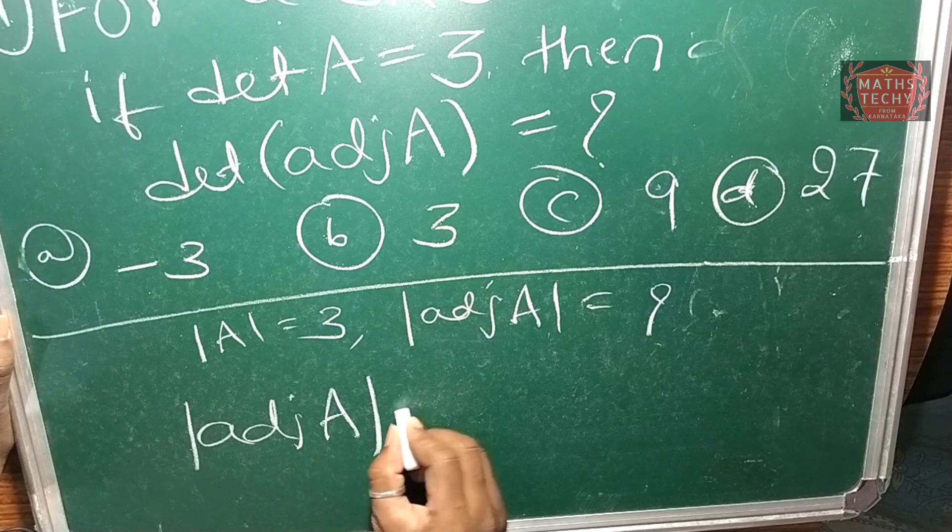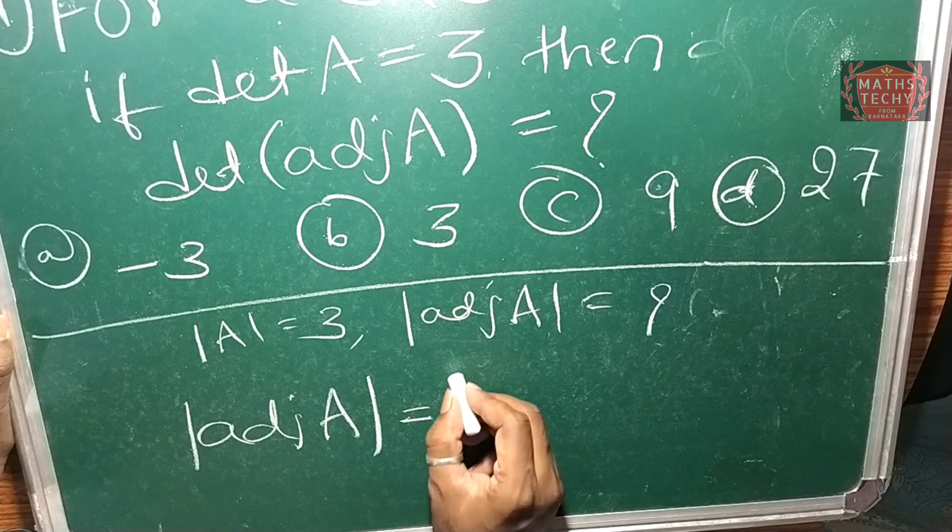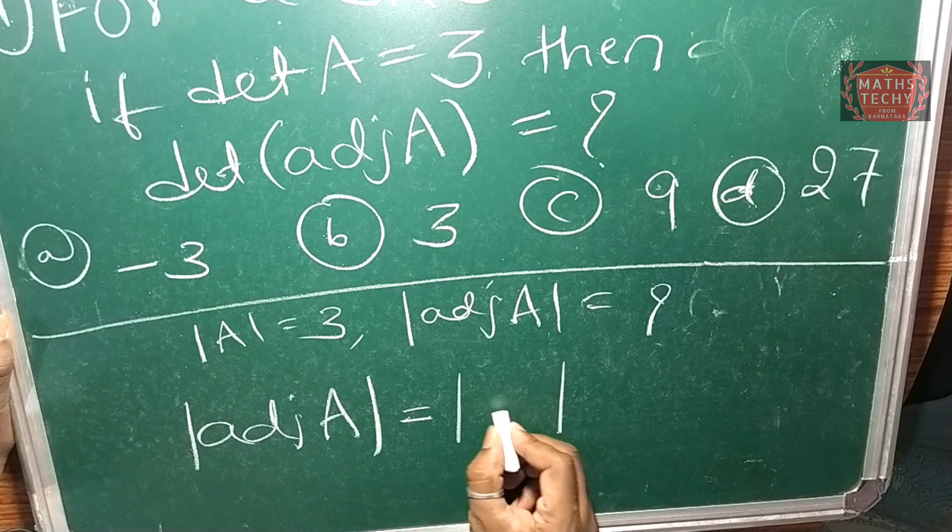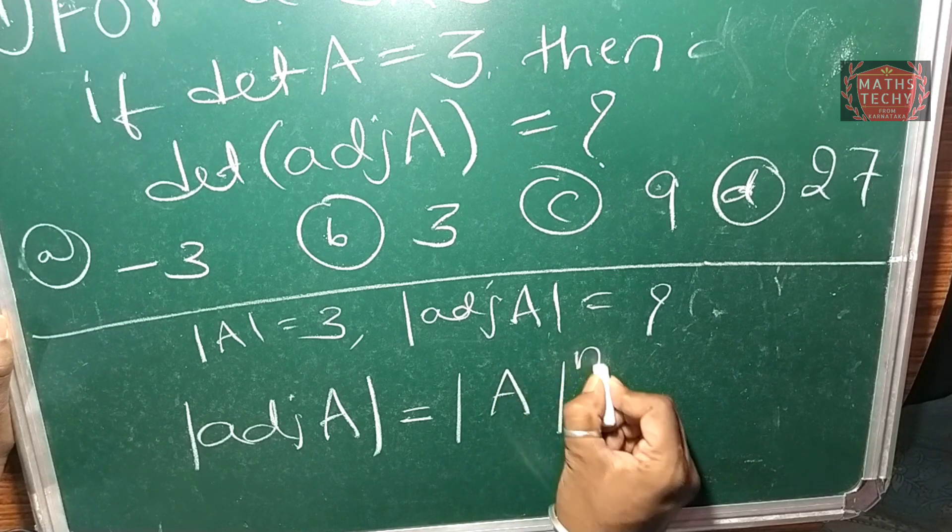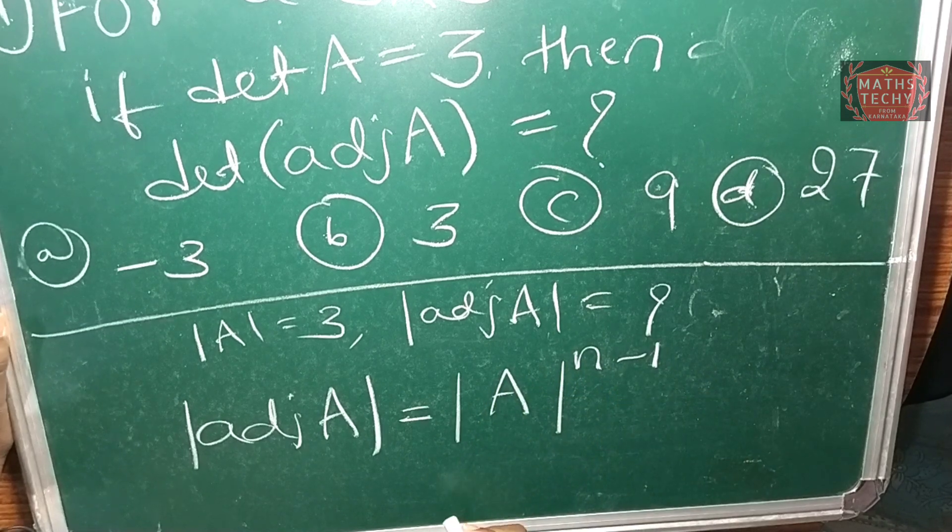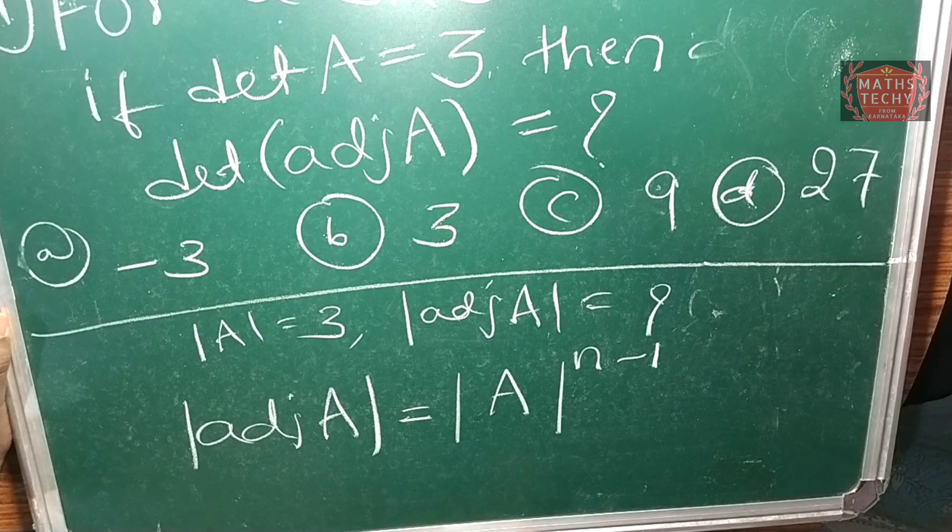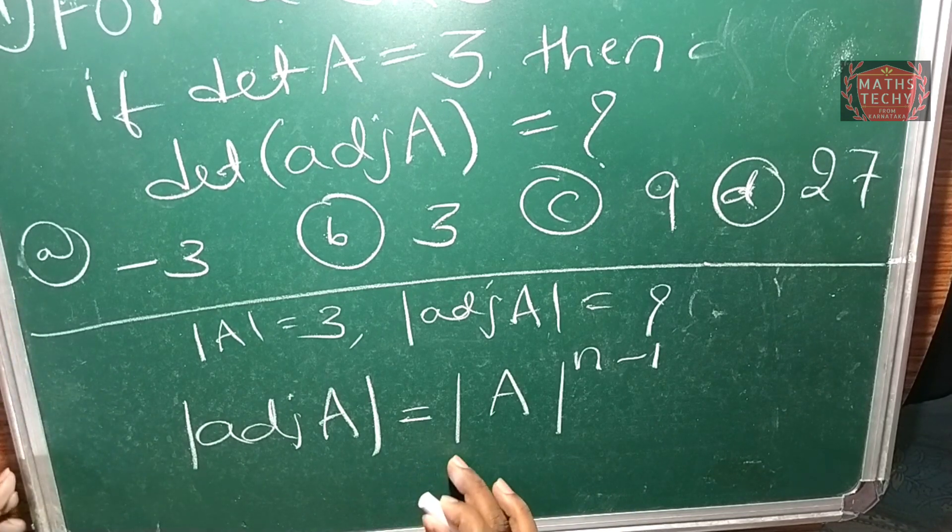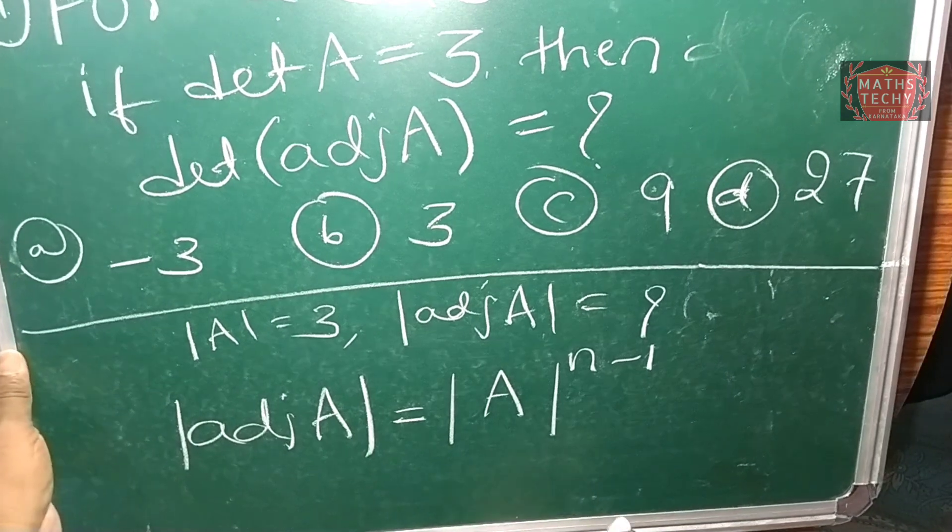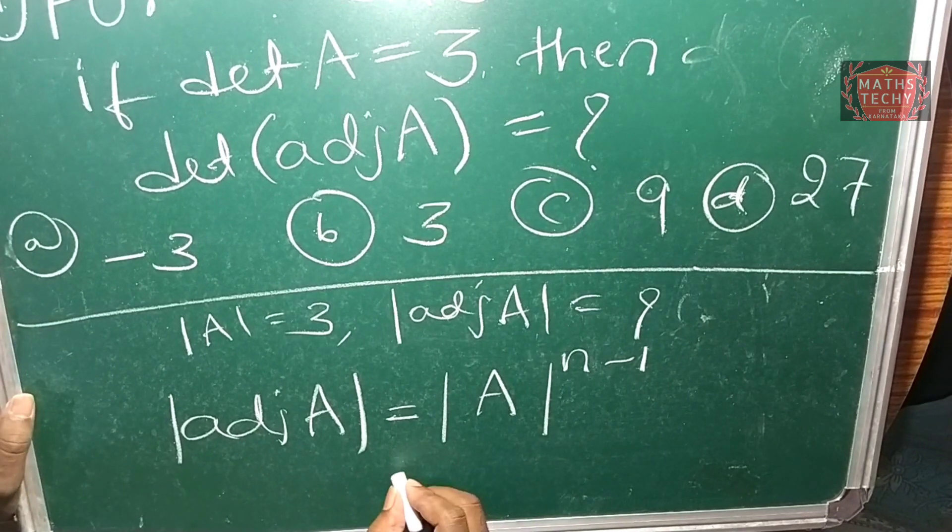The determinant of adjoint A is equal to - you can write here - determinant of A to the power of n minus one. This is the formula we will use to substitute our values.